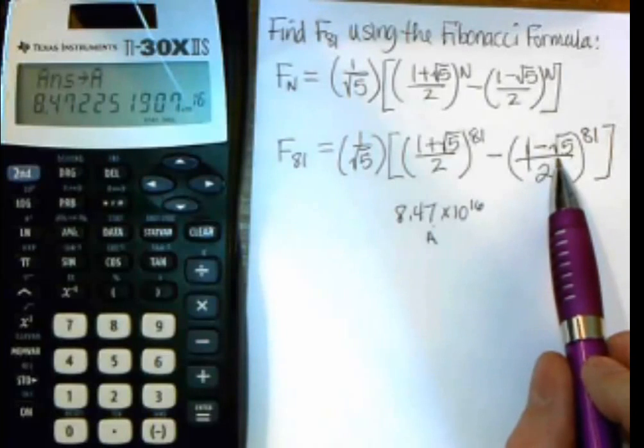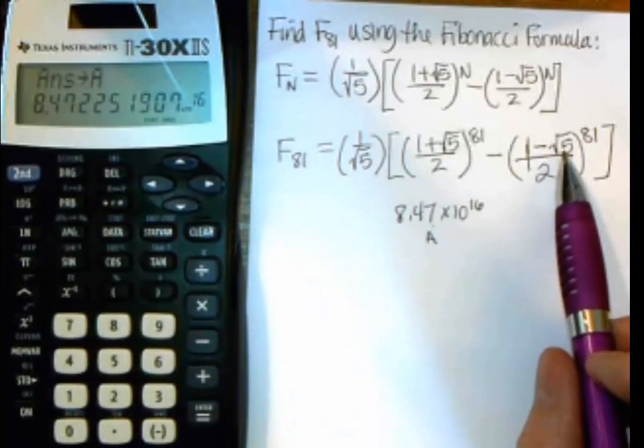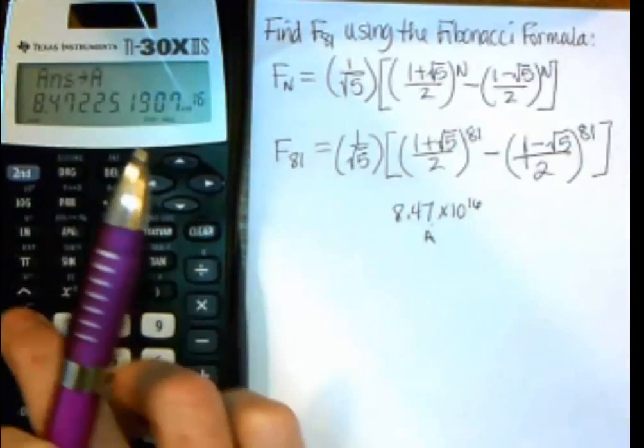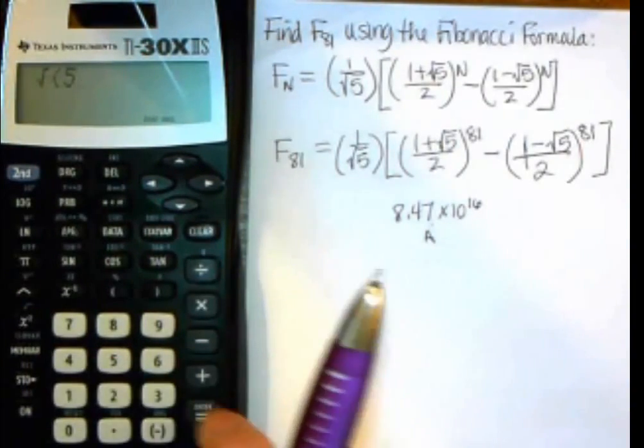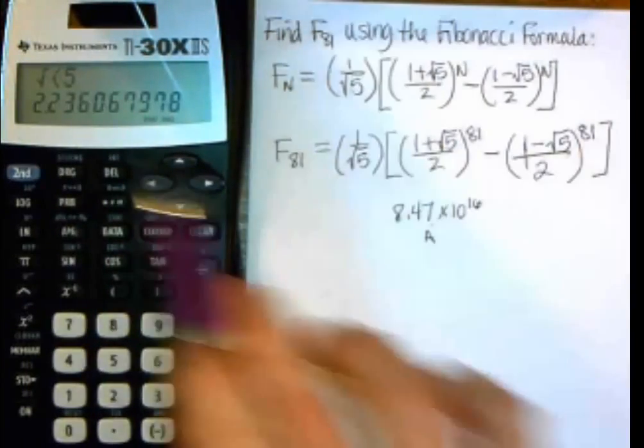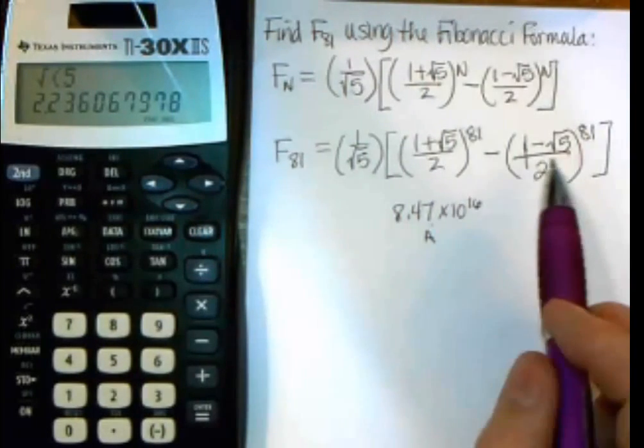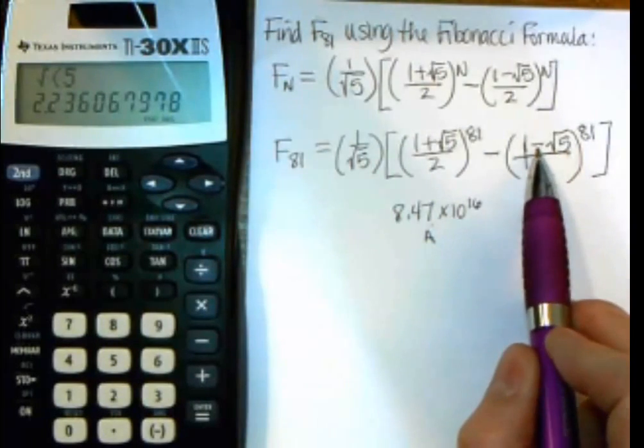Now I can move on to the second one because I have to do the order of operations on this one, too. So I need to do that square root first. And on this calculator, remember, we do the square root and then 5 equals. Remember, I told you you don't have to put that parentheses, and you can see I didn't need to there.